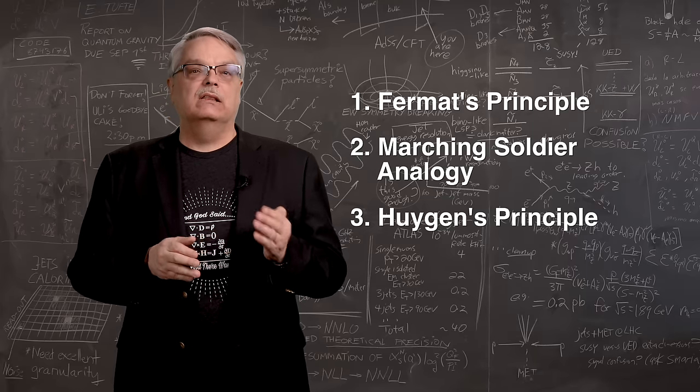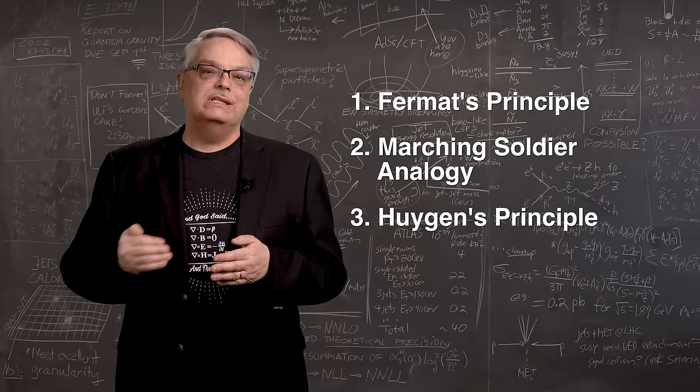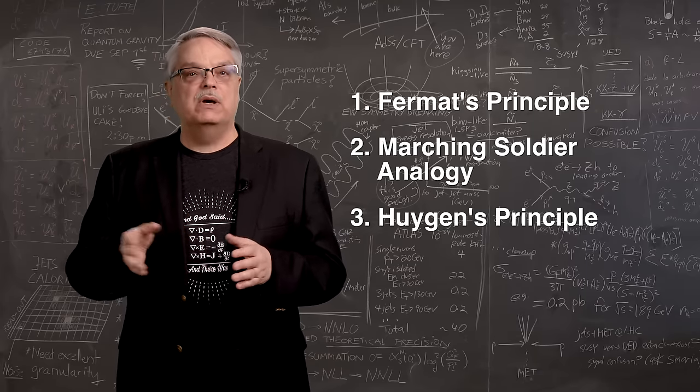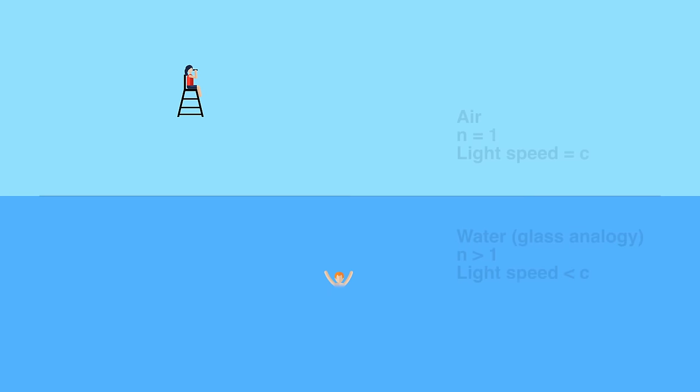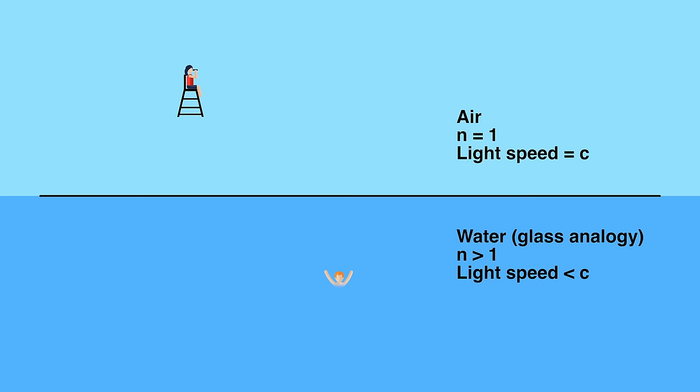Fermat's Principle says that light will travel from one point to the other taking the minimum amount of time. It's often explained in terms of a lifeguard and a drowning swimmer. In order to maximize the chances that the swimmer will be saved, the lifeguard needs to get to them as soon as possible.